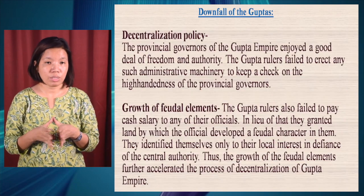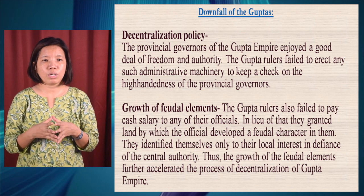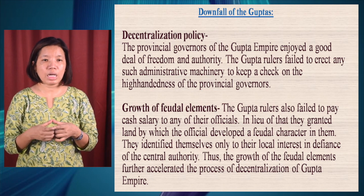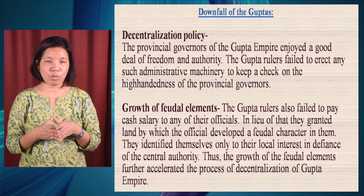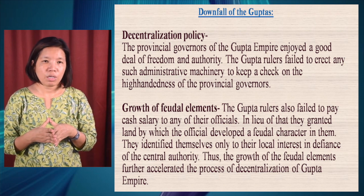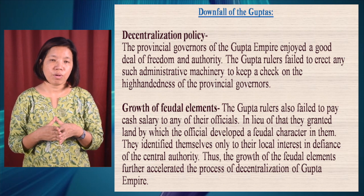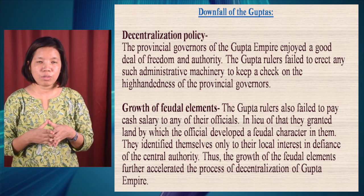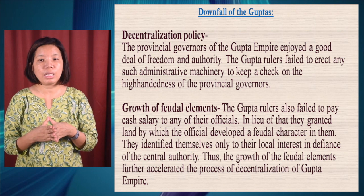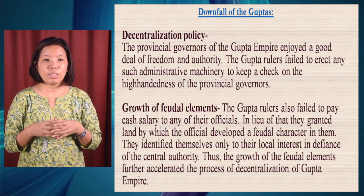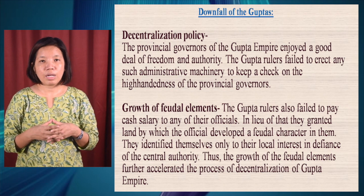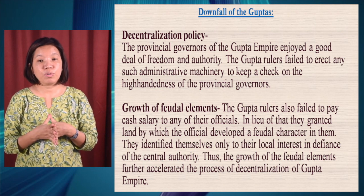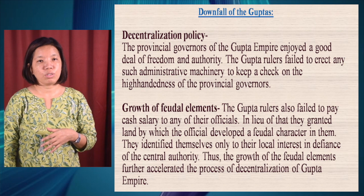The decentralization policy was another cause, as provincial governors enjoyed a great deal of freedom and the Gupta rulers failed to erect any administrative machinery to keep a check on their high-handedness. The growth of feudal elements also contributed: the Gupta rulers failed to pay cash salaries to their officials and instead granted land, causing officials to develop a feudal character. They identified themselves only with local interests in defiance of central authority, further accelerating the process of decentralization and the collapse of the Gupta Empire.